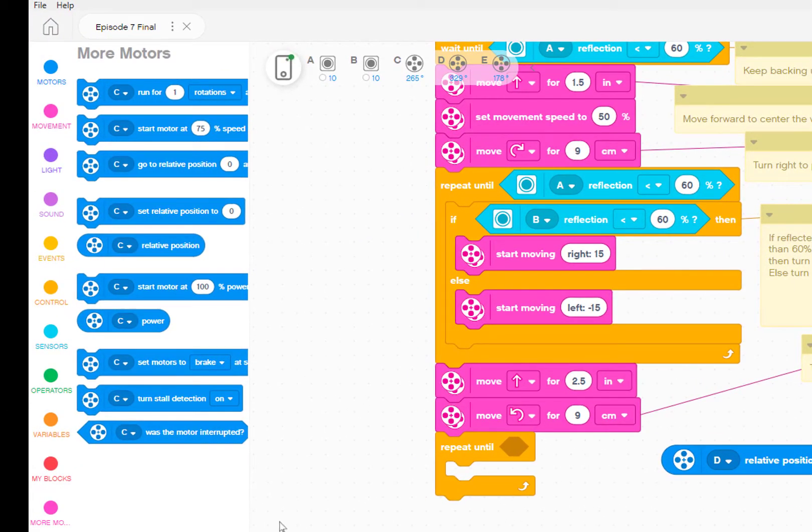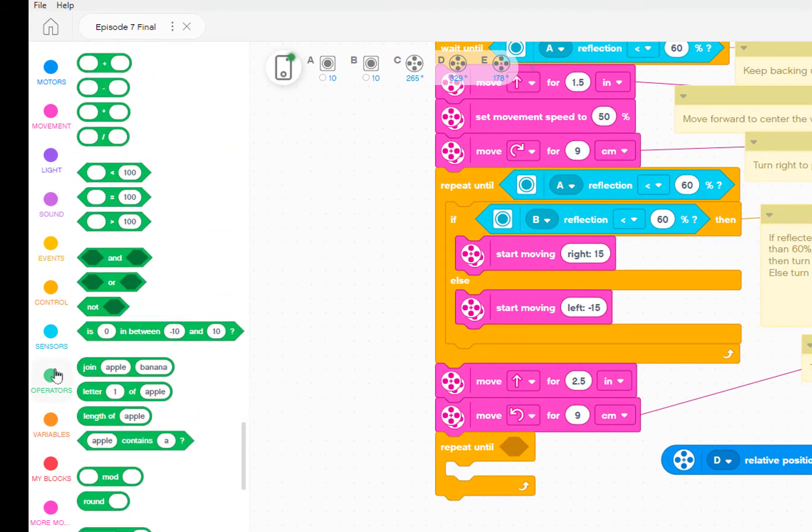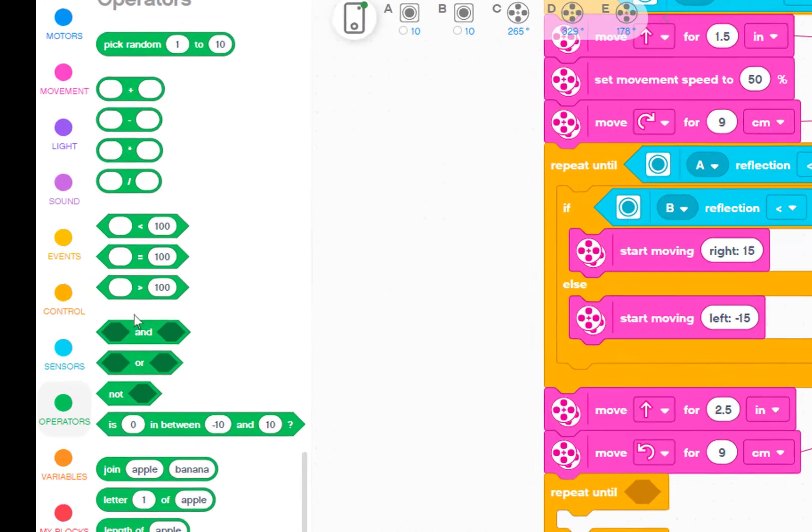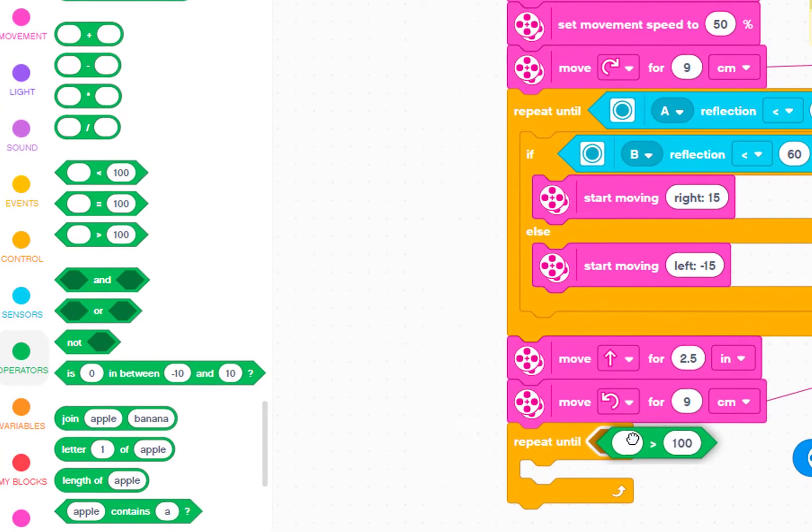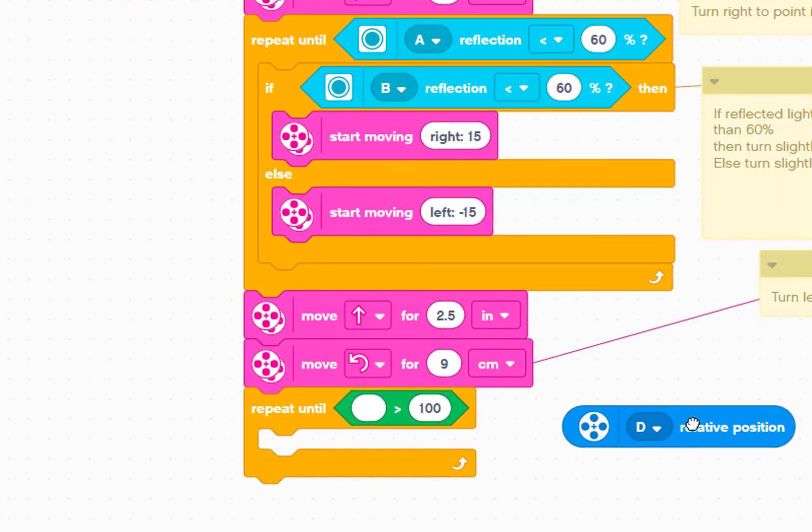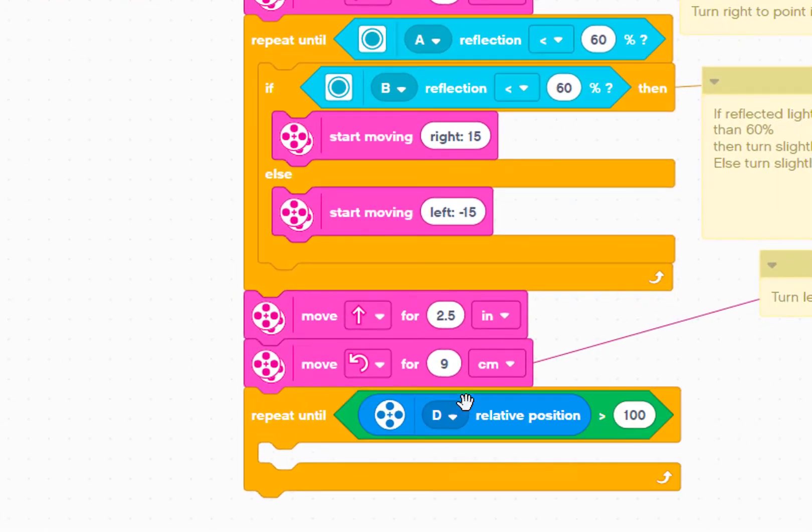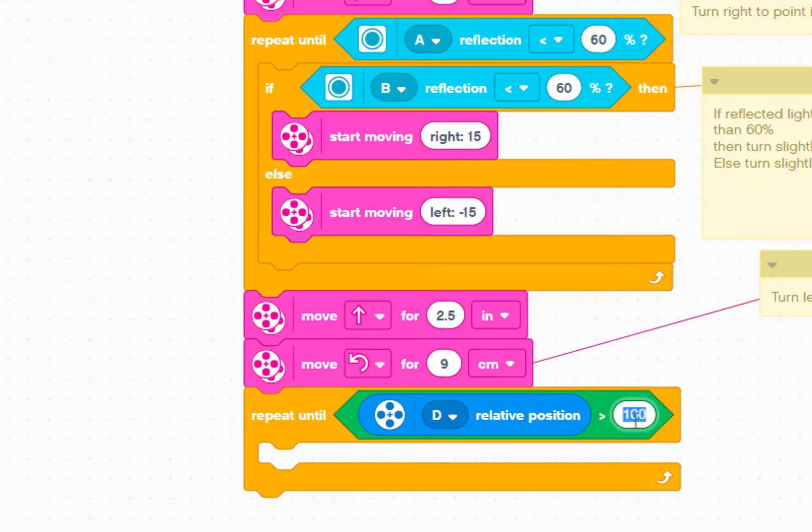We can use the relative position by comparing it to our desired number of degrees. We want to stop repeating when the motor's rotation degrees gets to 576. So let's use a greater than comparison and place a motor relative position block on the left side. Then let's use the fact that 576 is one unit greater than 575 and change the right side of the greater than comparison to 575.